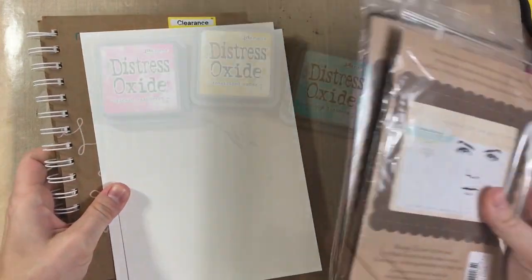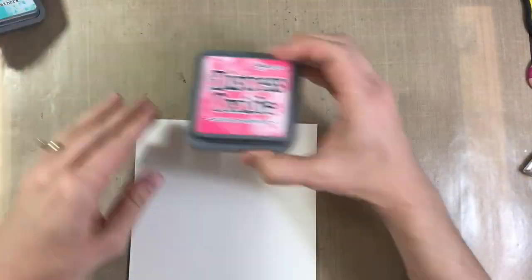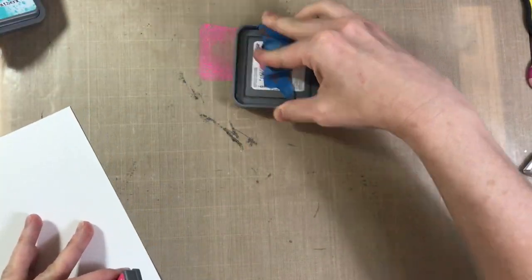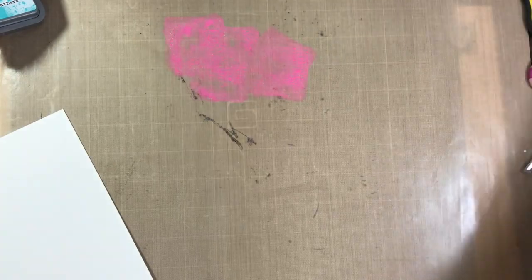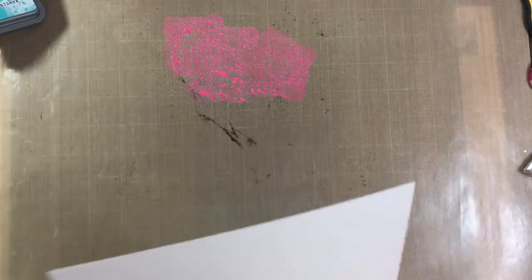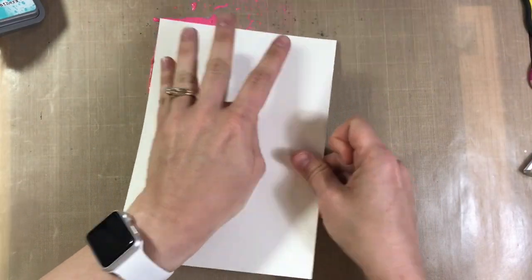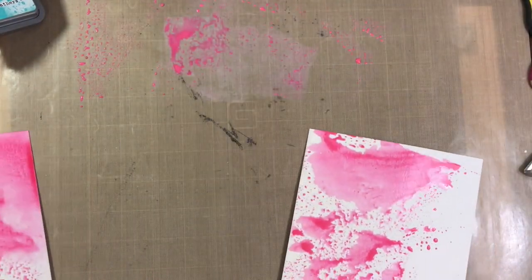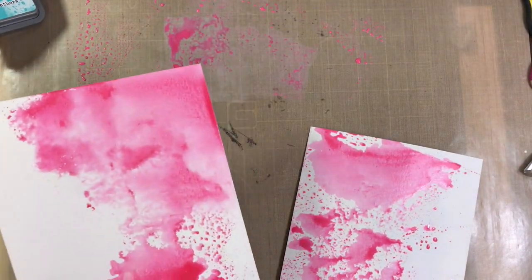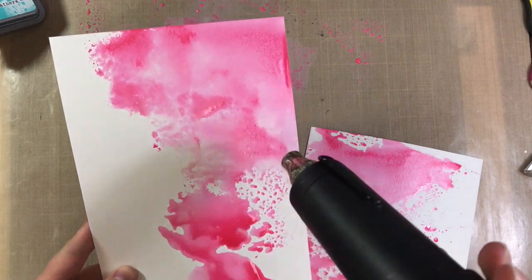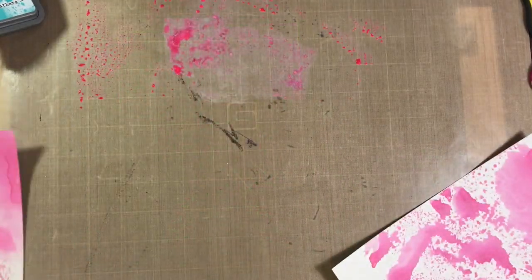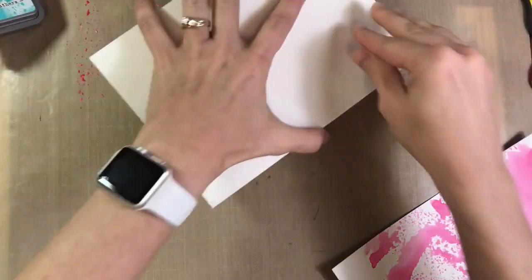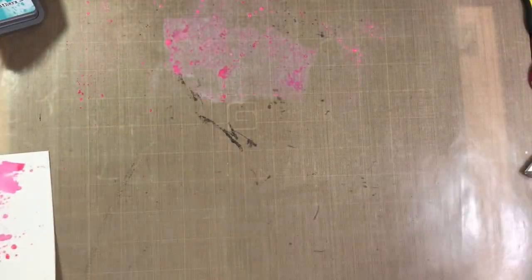So here are some of the supplies I used. I'm going to start off with some Kanson XL watercolor paper, which was a 9 by 12 piece. It's 140 pounds and I cut it in half so that I could do a notebook cover. I grabbed the Picked Raspberry Distress Oxide inks, which are a little bit different than the regular distress inks. They oxidize, which gives a kind of chalky look and they're really good to stamp with, whereas regular distress inks are not very good to stamp with.